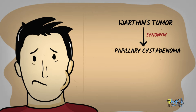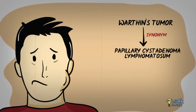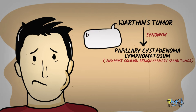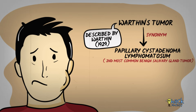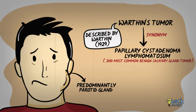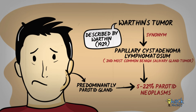Warthin's tumour, also known as papillary cystadenoma lymphomatosum, is the second most common benign salivary gland tumour, first described by Warthin in 1929. This lesion almost always occurs in the parotid gland and comprises 5–22% of all parotid neoplasms, although it may very rarely occur in the submandibular glands or other minor salivary glands.